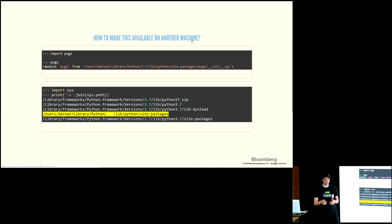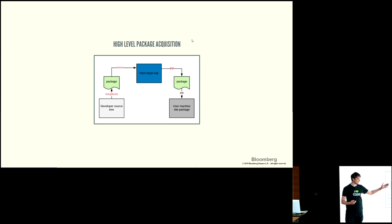So what it means to 'make a package available' to another developer on another machine is basically: we have to put it into that other machine's site-packages somehow. This is the goal of Python packaging — how do we take something from a developer's source tree, package it up, ship it to some cloud repository, from where other people can pull it down and install it into their site-packages folder.